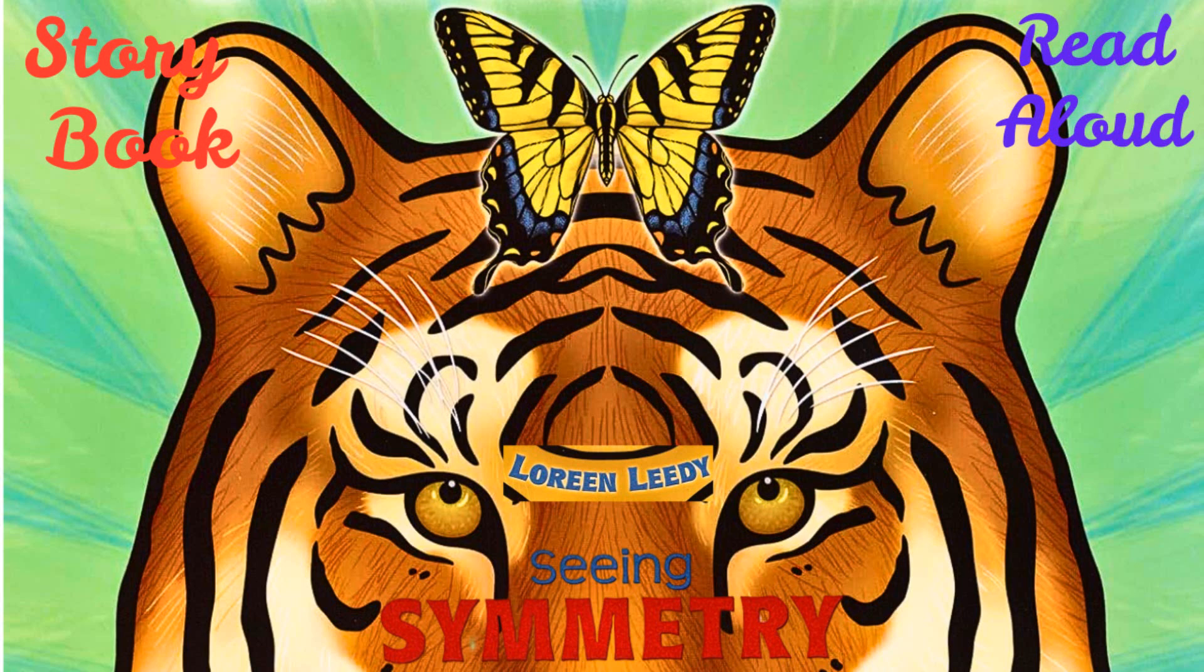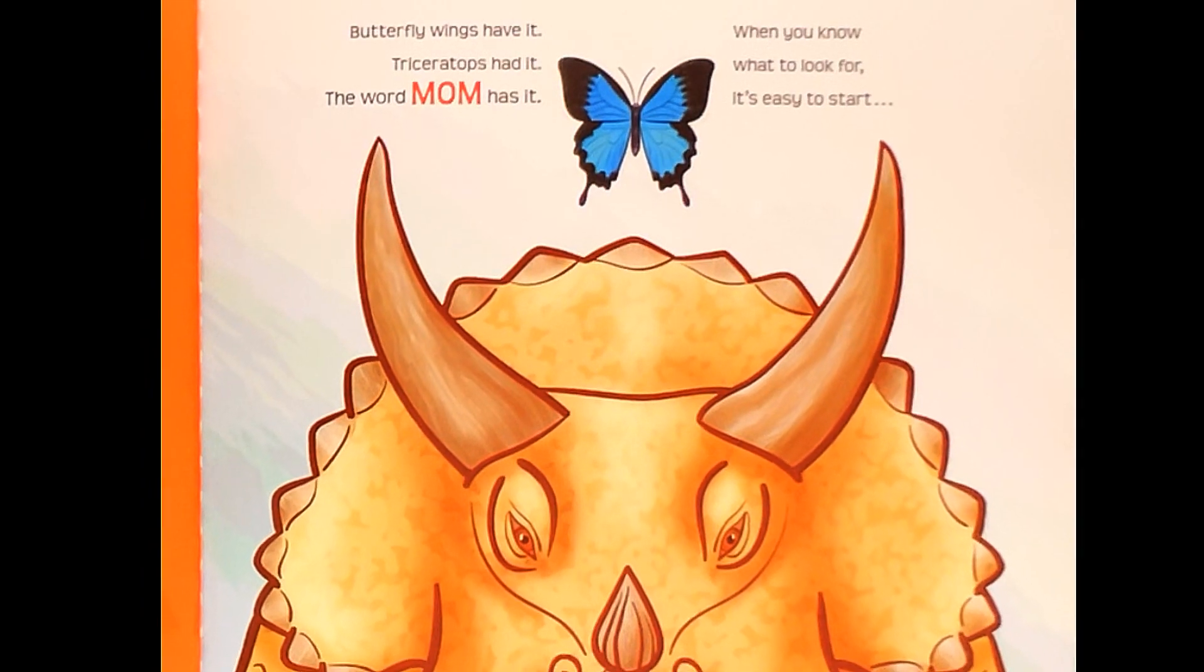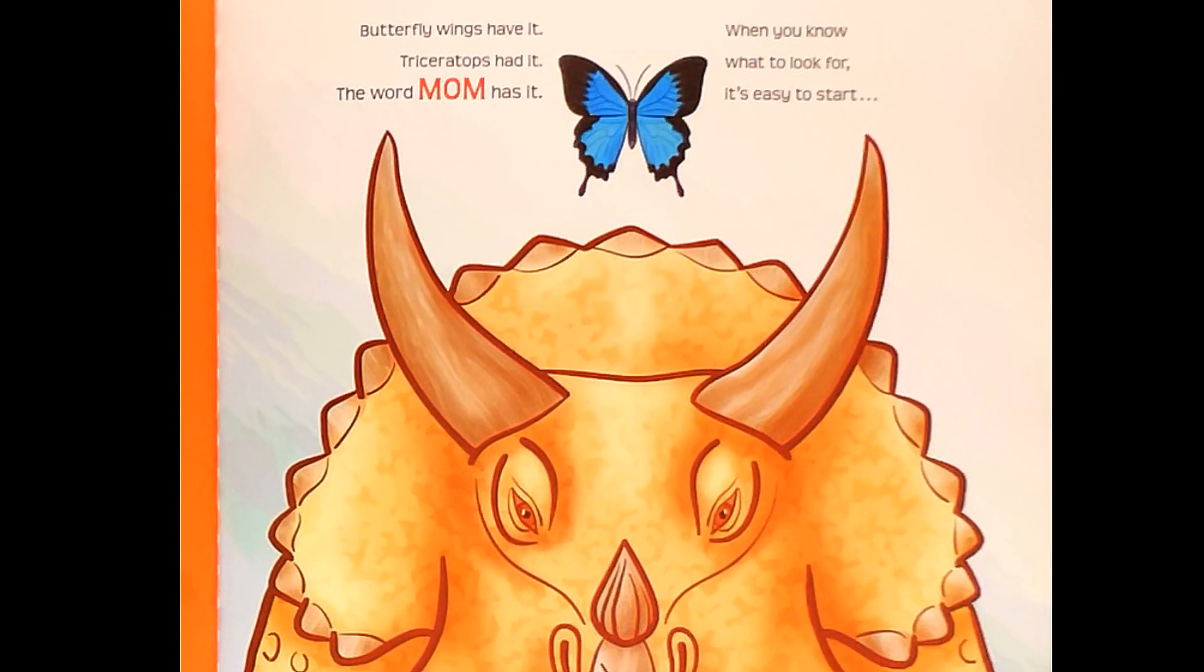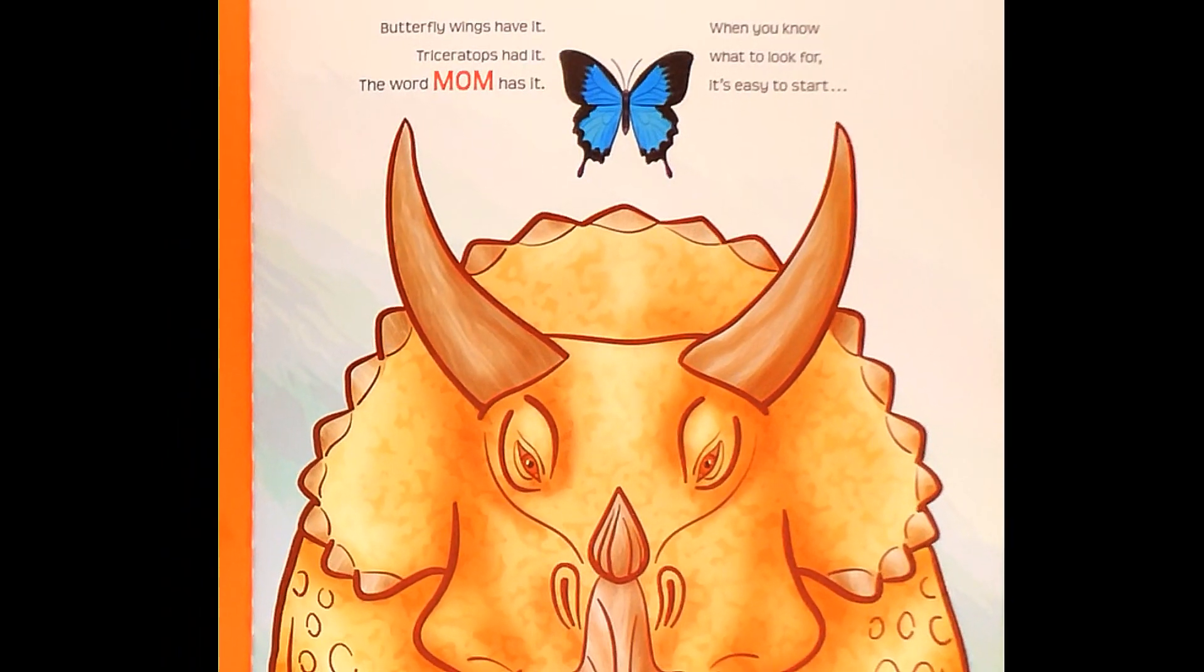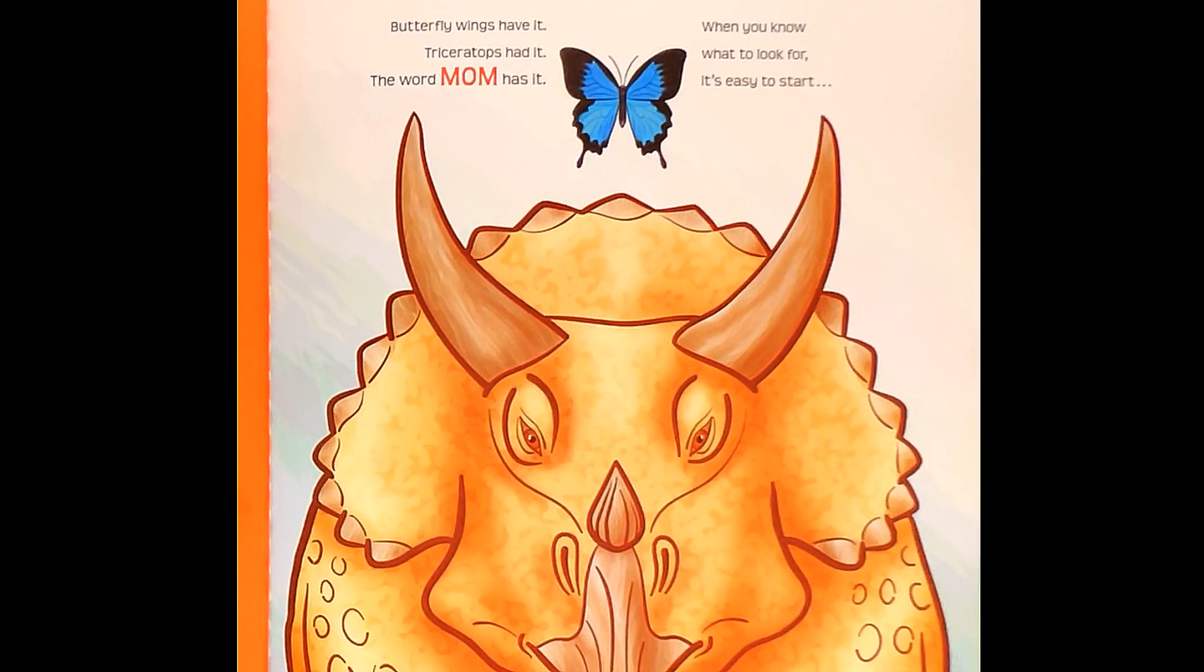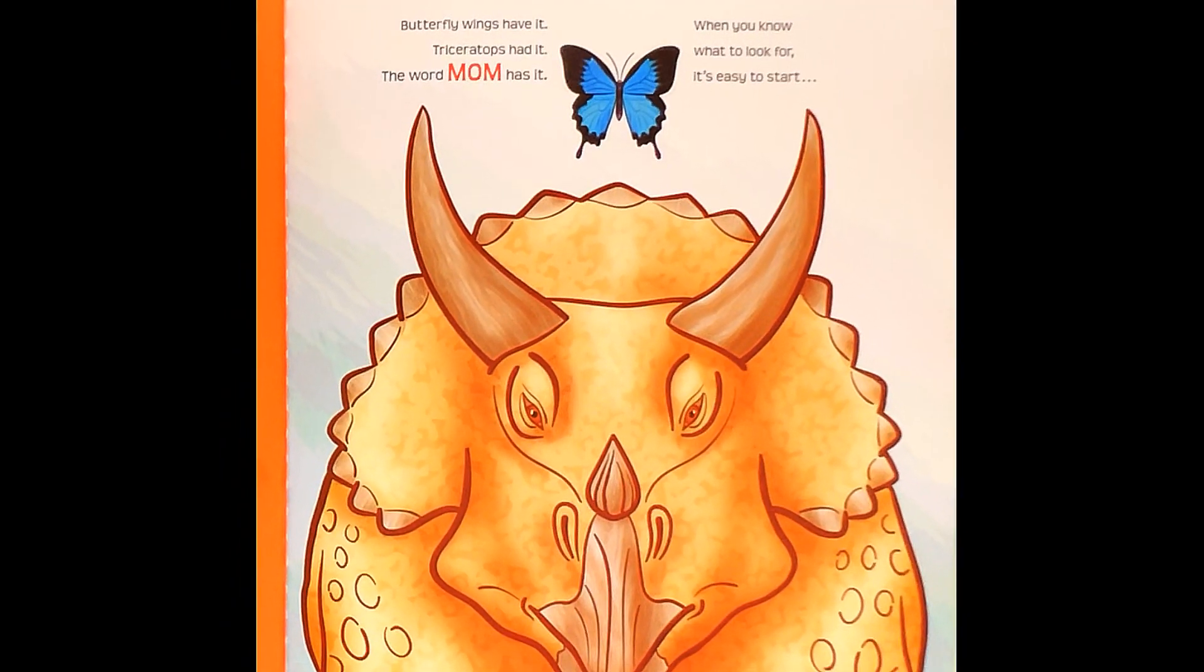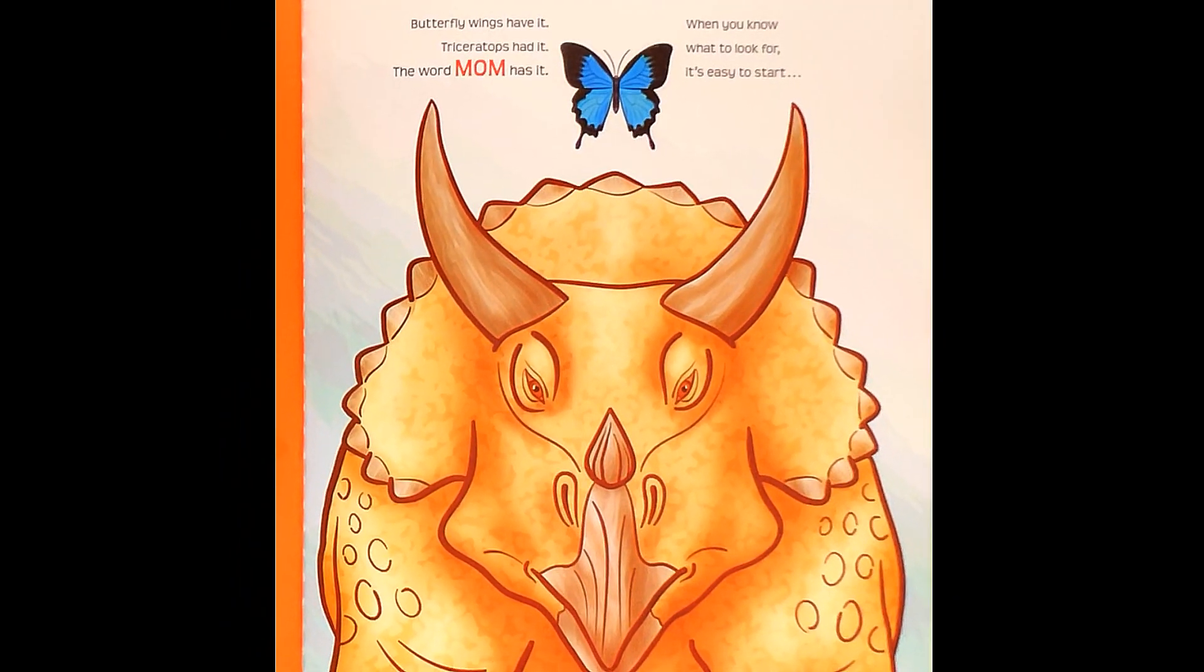Seeing Symmetry by Lorene Leidy. Butterfly wings have it, Triceratops had it, The word mom has it. When you know what to look for, it's easy to start.